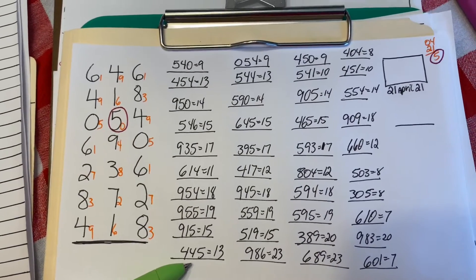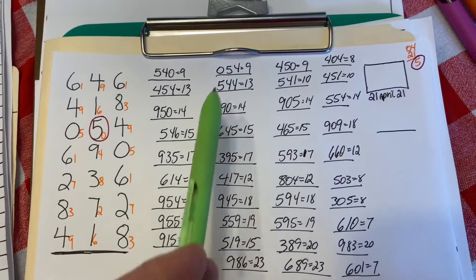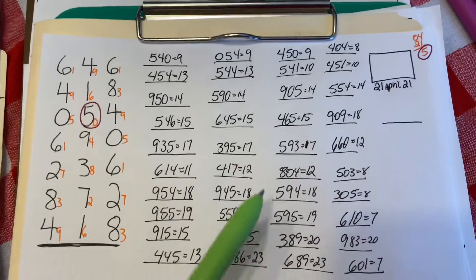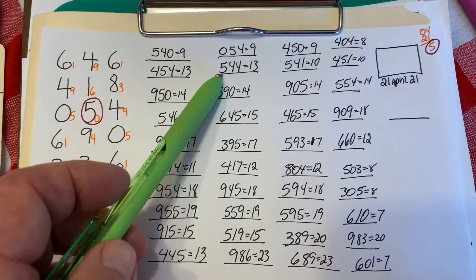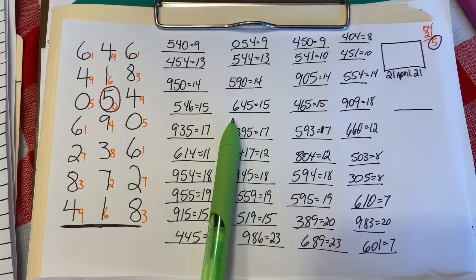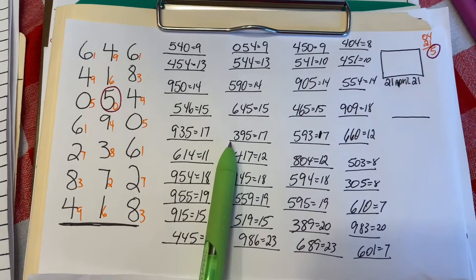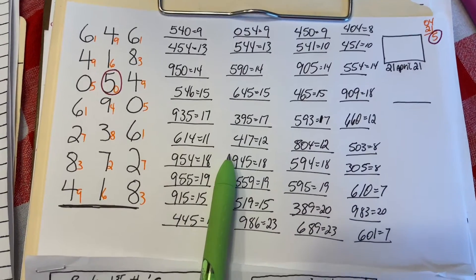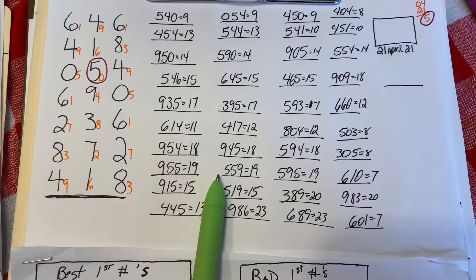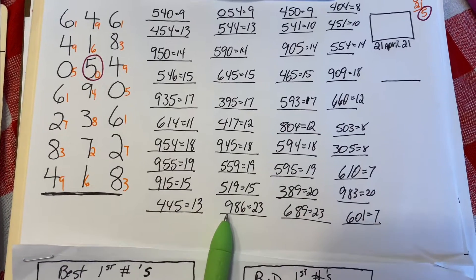Moving to the next row, we have 544, 590, 645, 395, 417, 945, 559, 519, 986.